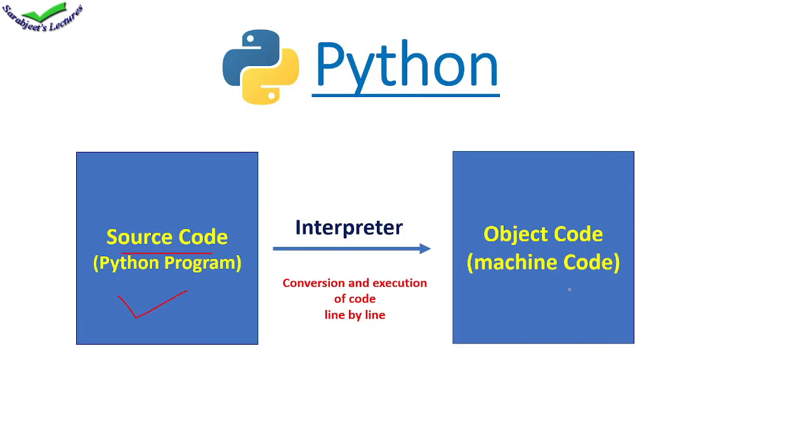At execution time, when it converts each line, if there's any syntax error in any line, the interpreter will immediately tell you that there's an error in that line. It will never read or convert the next line until you remove the error from the first line.